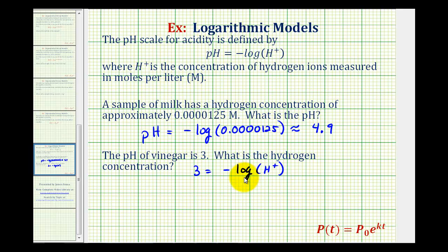Now we want to isolate the logarithm, so we'll divide both sides by negative 1. This just changes the sign of both sides of the equation. So now we have negative 3 equals the common log of the hydrogen ion concentration.